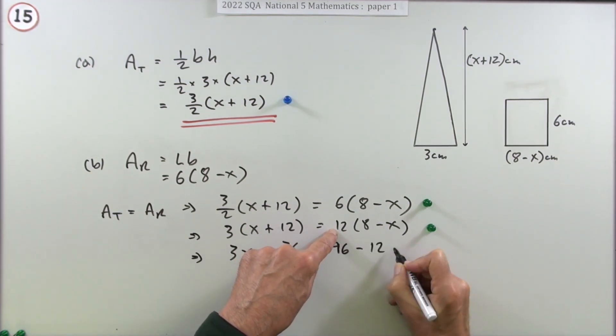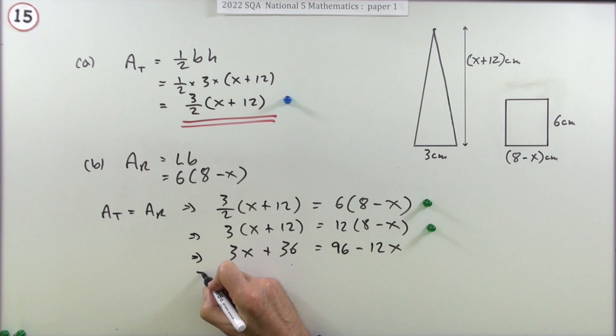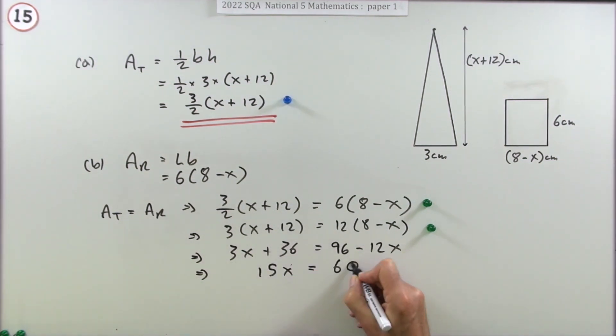96 minus 12x. That doesn't get a mark yet. Now bring them across, put the x's on this side. Take away 12 will become plus 12, which will make that 15x. That'll be minus 36, which knocks that down to 60. That gets a mark.